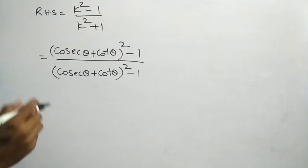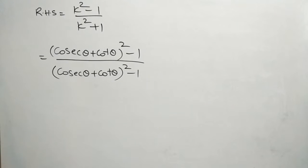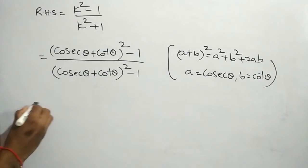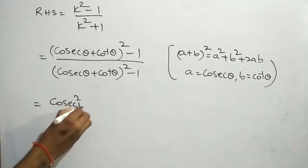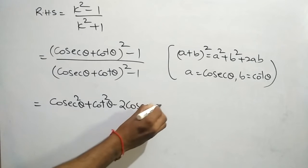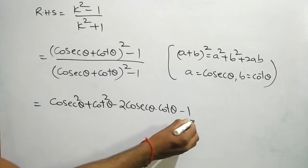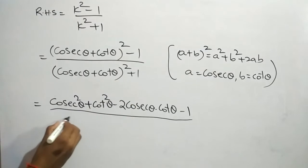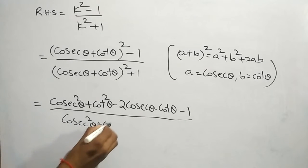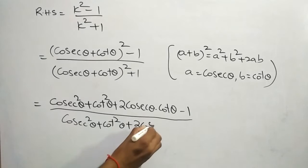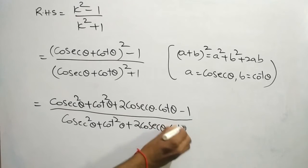This is in the form of the (a + b)² formula. The formula is a² + b² + 2ab. So we are expanding using (a + b)²: that is cosec²θ + cot²θ + 2cosecθ·cotθ minus 1, divided by cosec²θ + cot²θ + 2cosecθ·cotθ plus 1.